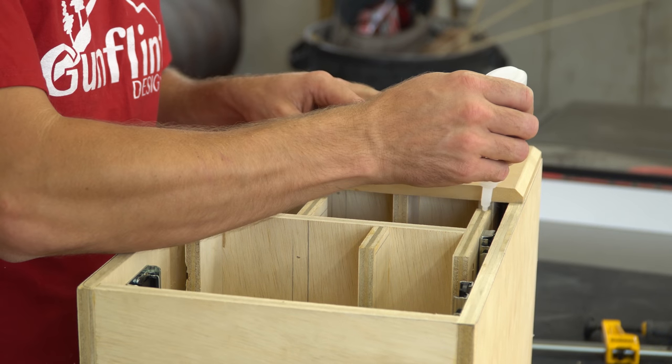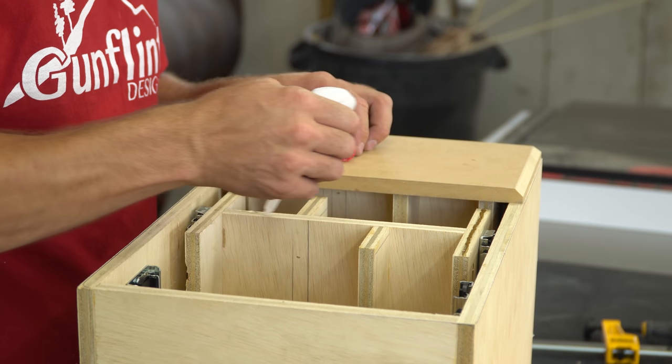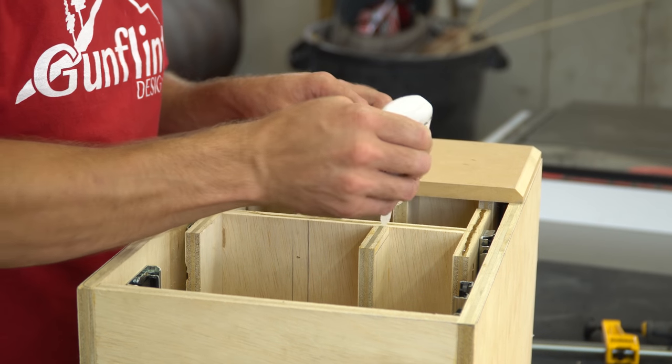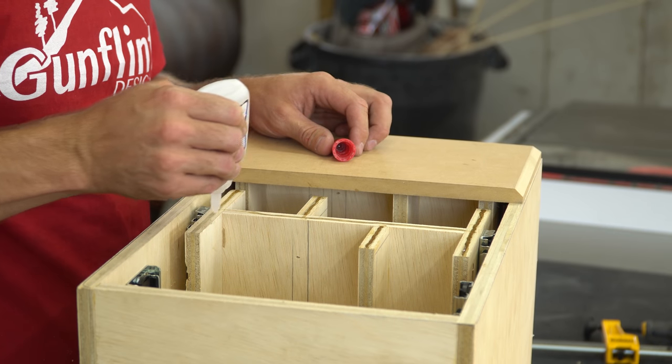I ended up using MDF for the drawer faces because I kept running into voids in my cheap plywood while adding the beveled edge at the router table. A classy hardwood would also be a good optional extra, especially if you plan to let this sit out on your counter instead of buried inside a cabinet.